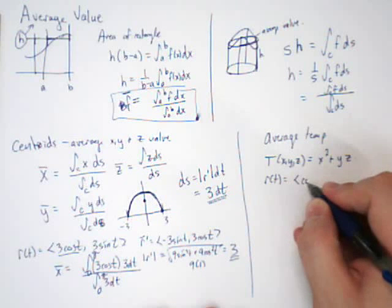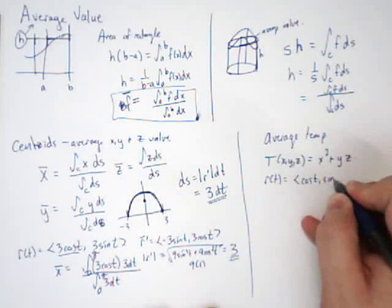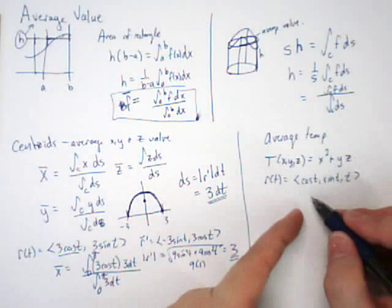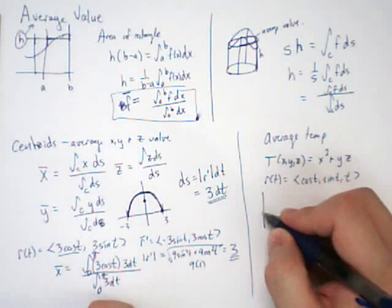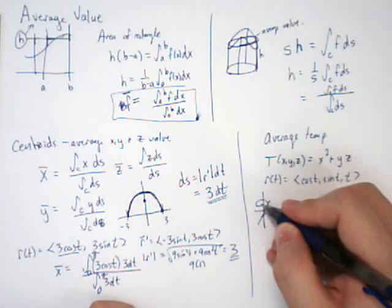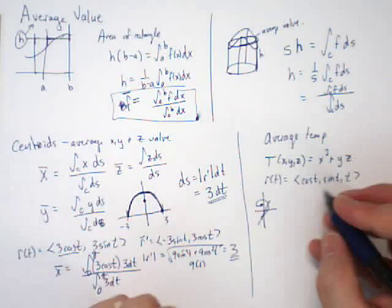And we go along a curve. So the curve we're going to find temperatures for is a helix: cosine t, sine t, t. We can do the same thing. If we're working on a helix, and we want to know what's the average temperature of points on the helix, then all we need to do is use the average value formula.